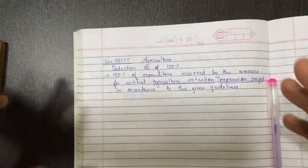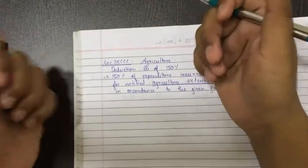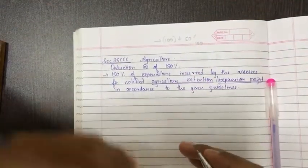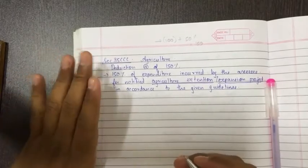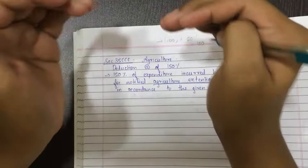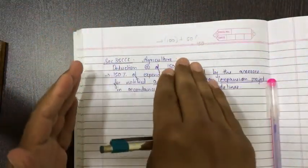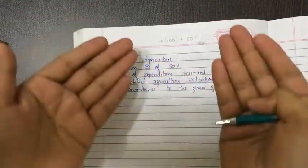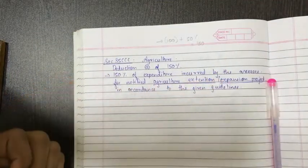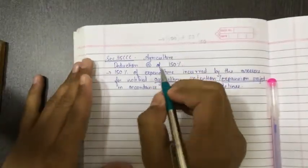I am telling gross profit because I am keeping it very simple right now. When the sum will come in an inverse manner, when the net profit will be given and all the expenses will be given, from that we have to add and subtract. That I will be teaching you later, don't worry. First understand that from the GP, not 100 percent expenses will be allowed but 150 percent of expenses of agriculture extension expansion project will be allowed.